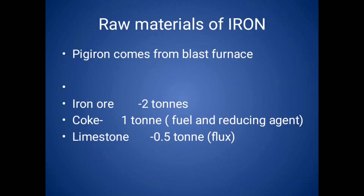The raw materials for iron are iron ore, coke, and limestone. By taking two tons of iron ore, one ton of coke, and 0.5 tons of limestone, we get one ton of pure pig iron. Coke provides the heat and enables the chemical reactions to separate impurities from the ore.